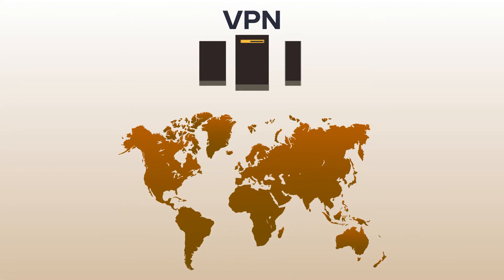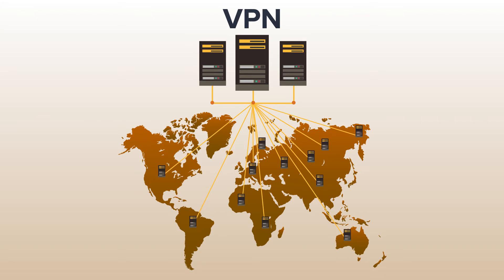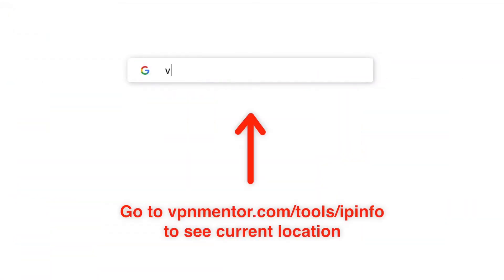Changing your IP address to the country you want is really simple — all you need is a good VPN. A VPN is software you download that reroutes your internet traffic to a remote server. Simply connect to the country you want and your IP address will appear as if it's coming from that country.